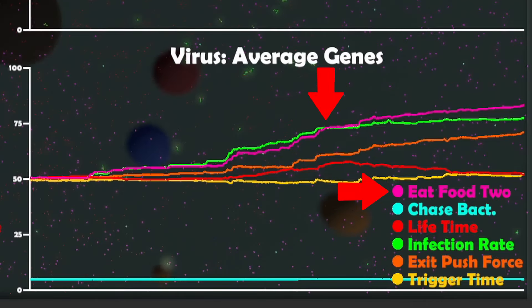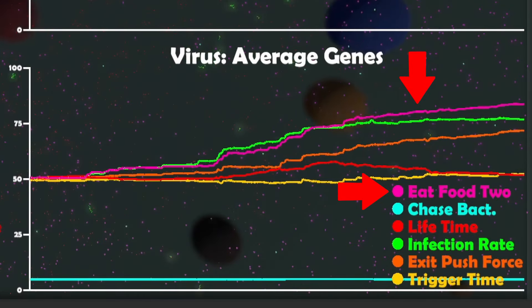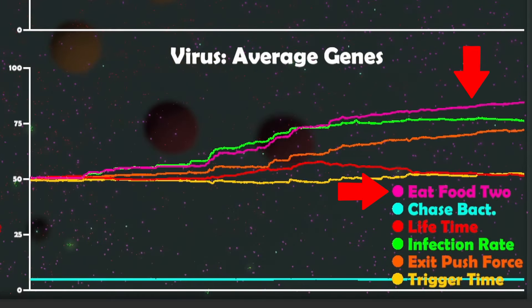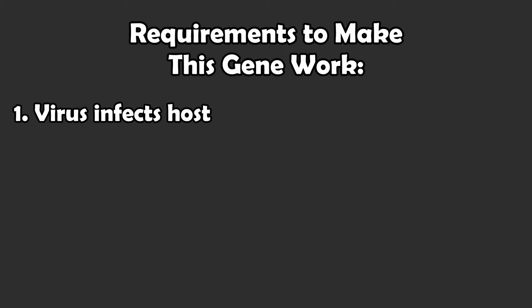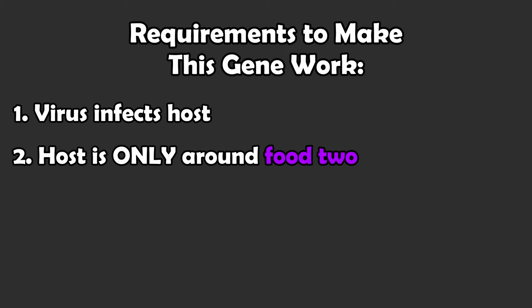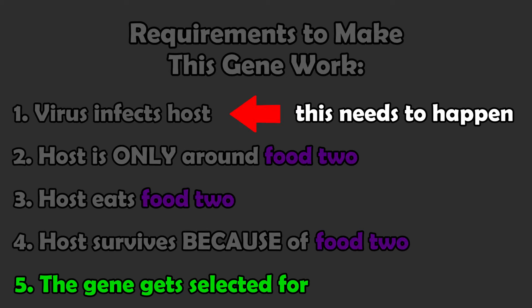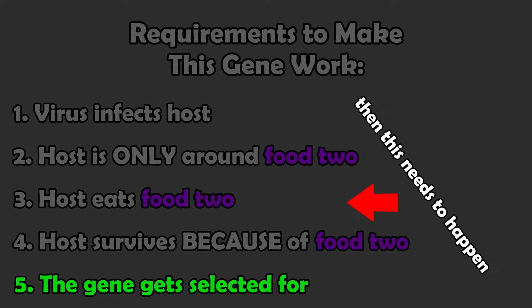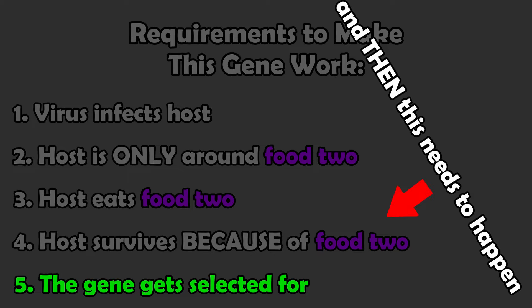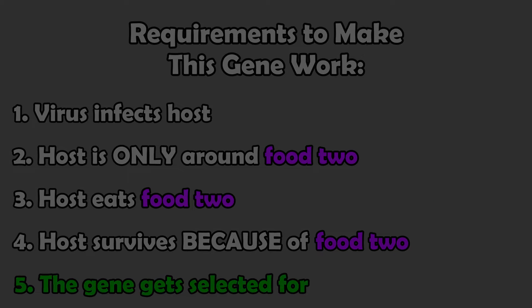And if you think about it, this makes sense because these are not very direct effects where the bacteria just runs out of energy and die. We need it such that the virus can infect the host and the host is only around purple food. So they need to eat that and be able to survive as it was not surviving. So my point is, I think this gene was working, but it was not quite easy to see its effects on these graphs because it was such a secondhand effect that it actually took a lot of time to kick in.